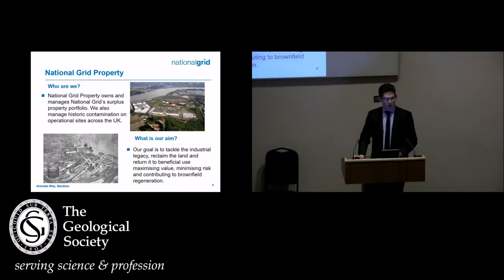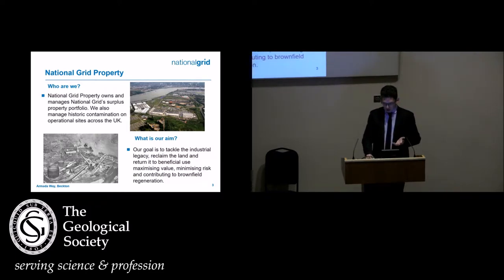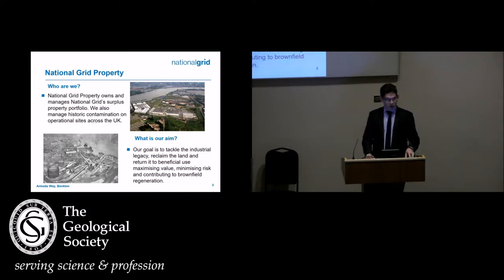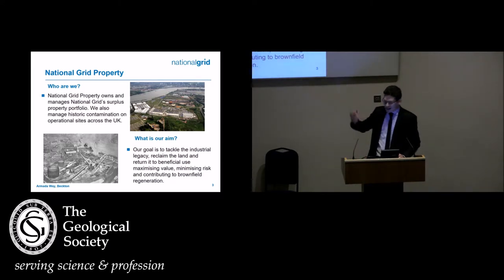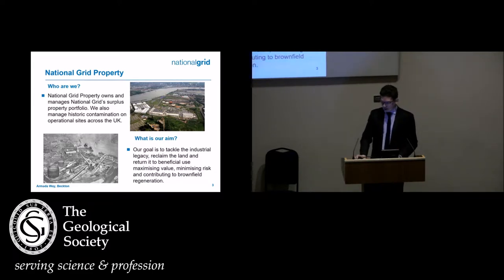National Grid Property is a very small part of a much larger utility company. There are two parts to what we do: the surplus sites we own as a non-regulated business — our job is to take these difficult, risky sites and get them to a position where we can sell them and return them to beneficial use. We also have a consultancy role to the rest of the business — if there's a contaminated land issue elsewhere, we support and help manage that risk. Becton is one of our largest sites in London — I'm led to believe it was the largest manufacturing gas plant in Europe in its time.